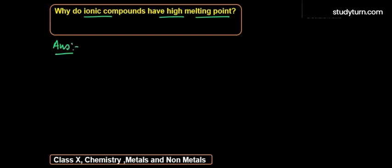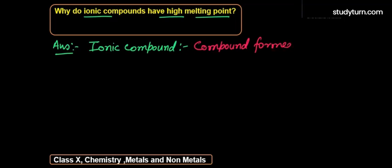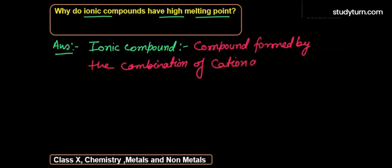Ionic compound - first we will know that ionic compound is basically the compound formed by the combination of cation and anion.